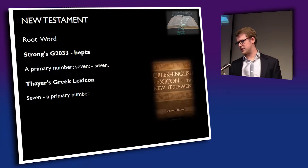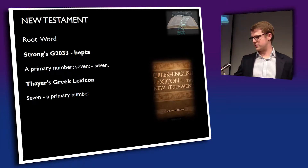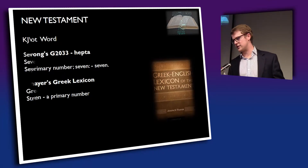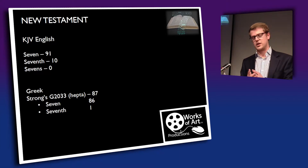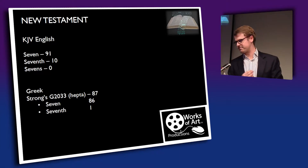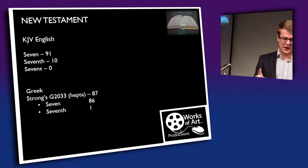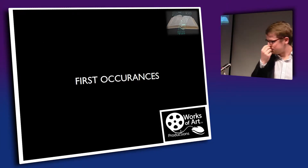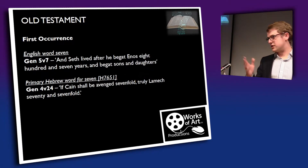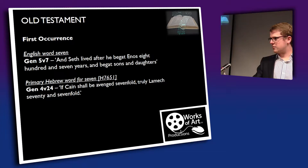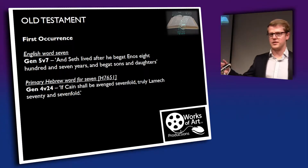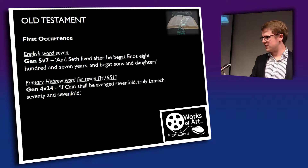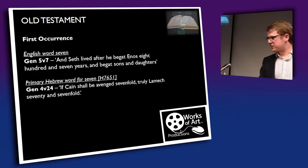Let's look at first occurrences in the Old Testament and then the New Testament — splitting into the first occurrence in the English and then, more importantly, the first occurrence in the Hebrew of the primary word. Turn to Genesis 5, verse 7. Actually, this is the chapter in Genesis 4 where God chastens Cain for killing his brother, but then we read a point of change later in the chapter.